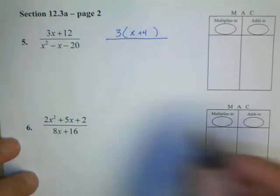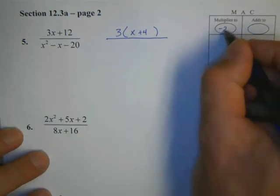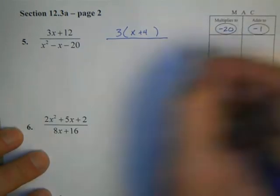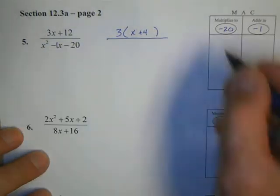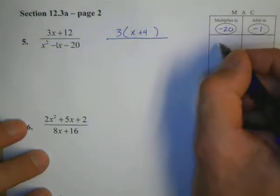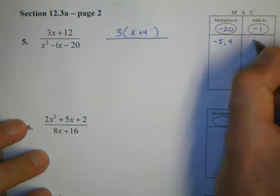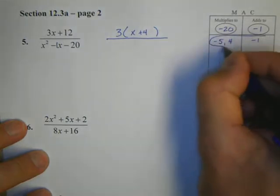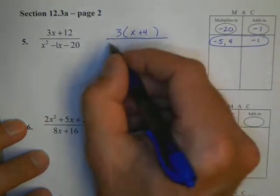As we look at the bottom, because it's a trinomial, we're going to use the Mach method. We're going to say what multiplies to negative 20 that adds to negative 1, realizing there's a negative 1 in front of that x there. Well, the factors that work there are, very simply, negative 5 and positive 4 add to negative 1. So that's our multiply add 2 step.